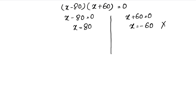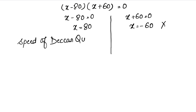Setting x plus 60 equals 0 gives x equals minus 60, which is not possible since speed cannot be negative. Therefore the speed of the Deccan Queen is 80 km per hour.